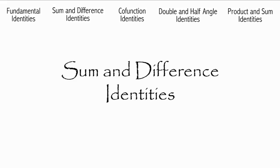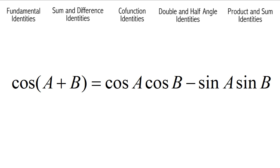Now we're going to do the sum and difference identities. Cosine of angle A plus B is equal to cosine A times cosine B minus sine A times sine B. Cosine of angle A minus B is equal to cosine A times cosine B plus sine A times sine B.